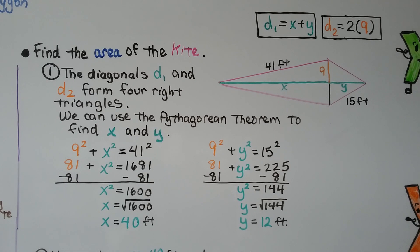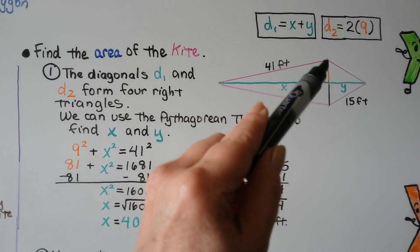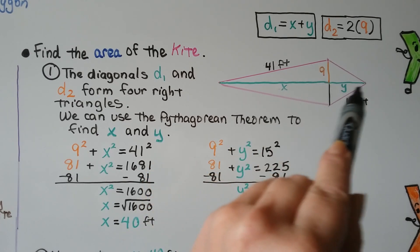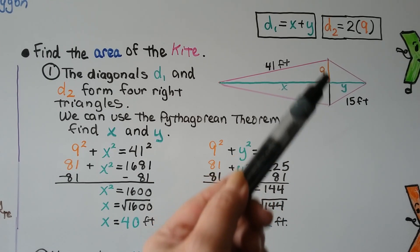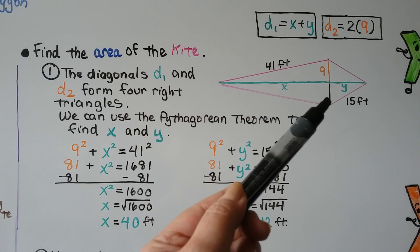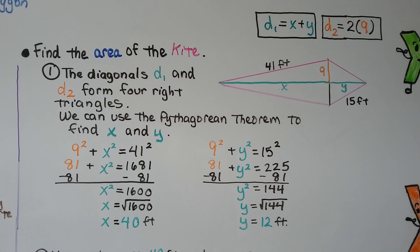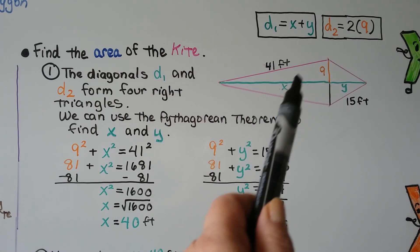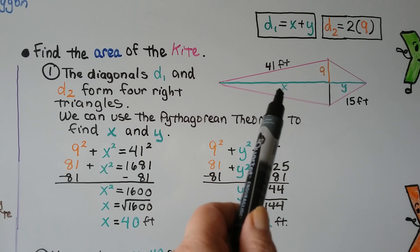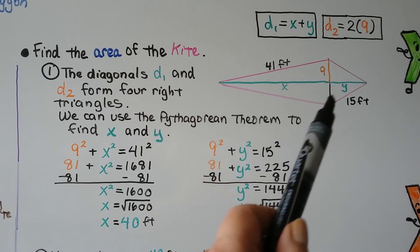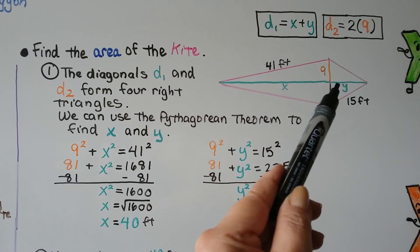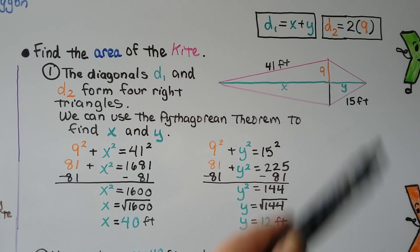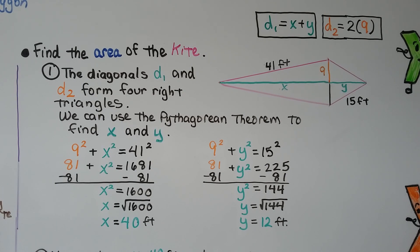Now take a look at this diagram. We have a green diagonal — our first diagonal d sub 1, equal to x plus y — and another diagonal. One half-segment measures 9, and since the rhombus diagonals bisect each other, the other half also measures 9, so d sub 2 equals 2 times 9. We have a triangle with legs of 9 and x and hypotenuse 41 feet, and another triangle with legs 9 and y and hypotenuse 15 feet. The diagonals form four right triangles, so we can use the Pythagorean theorem to find x and y.